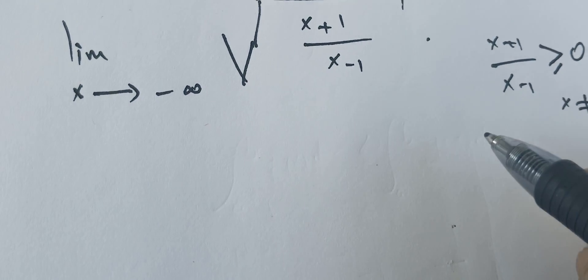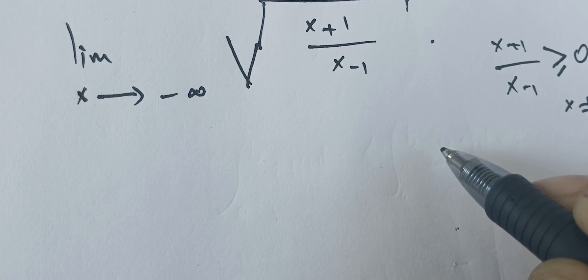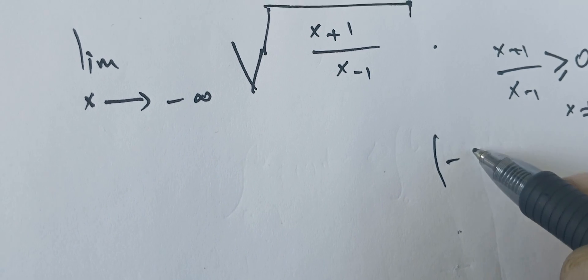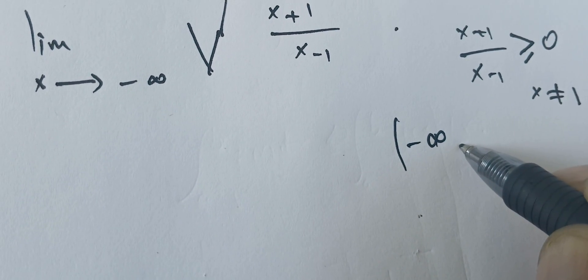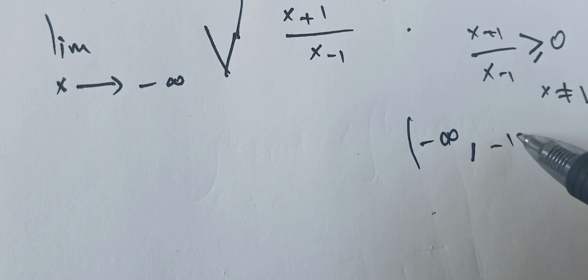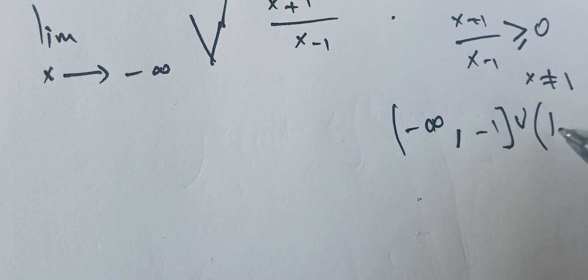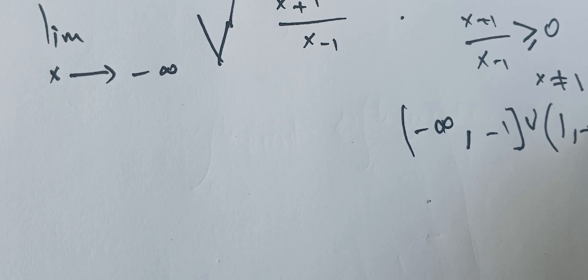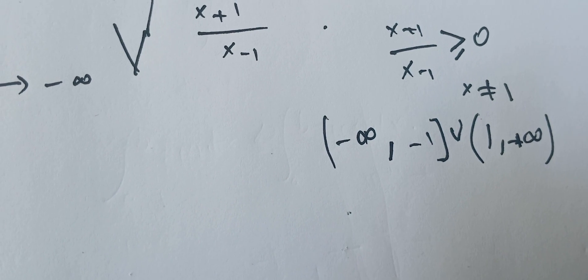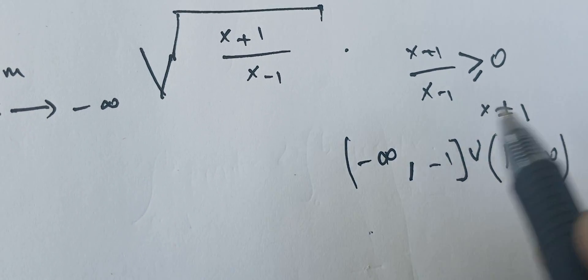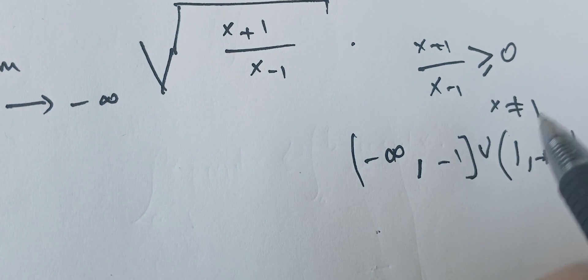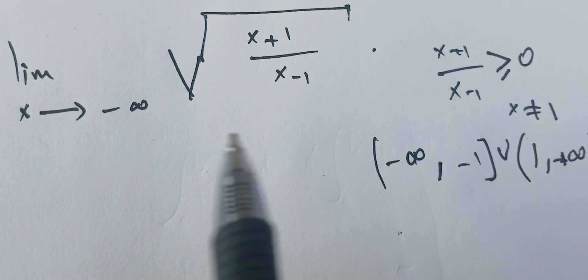If you work this one out and solve, you will see that the domain for our function is minus infinity to minus 1, union 1 to plus infinity. So this is the domain where our function is defined.